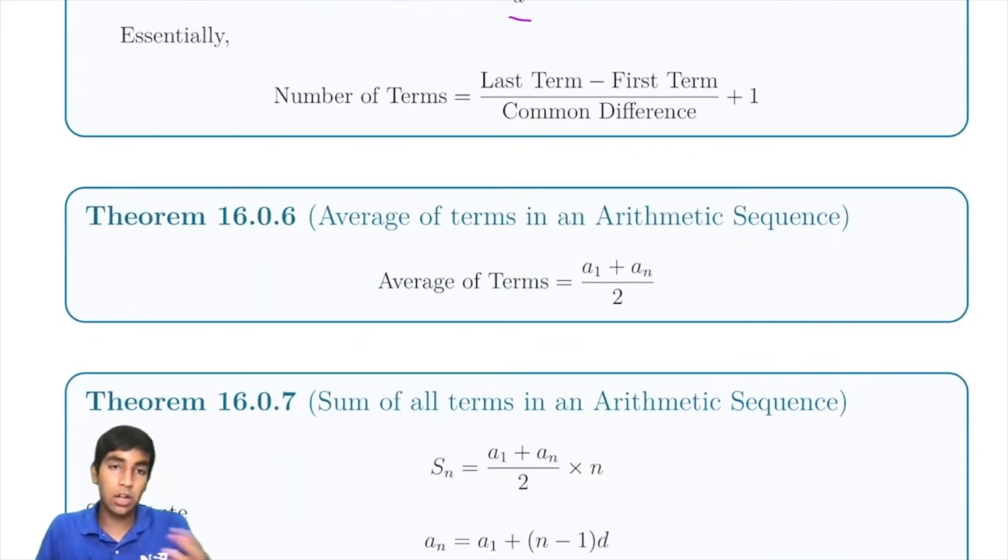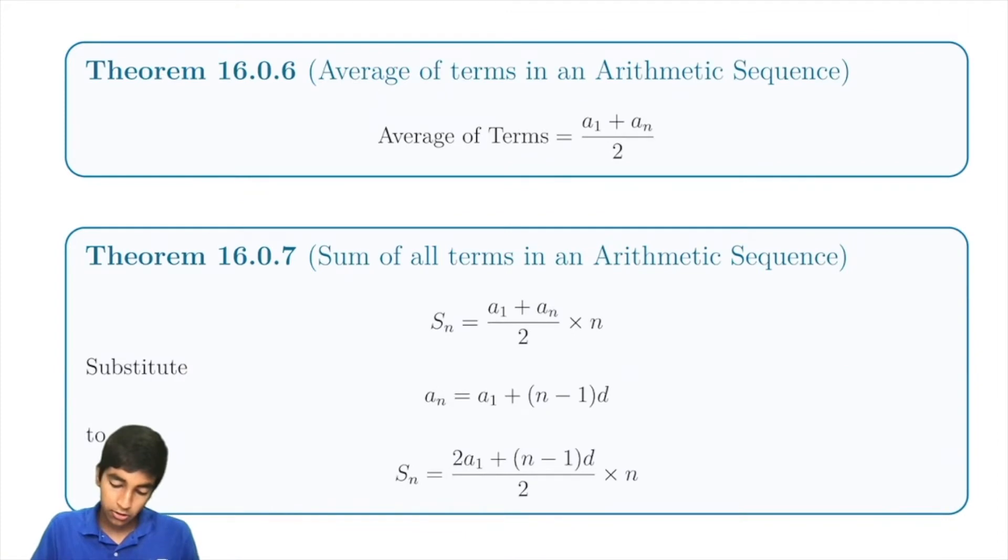The average is just the sum of the first and last terms. And the sum is just the average from above times the number of terms. We can also substitute a_n to get this formula over here.